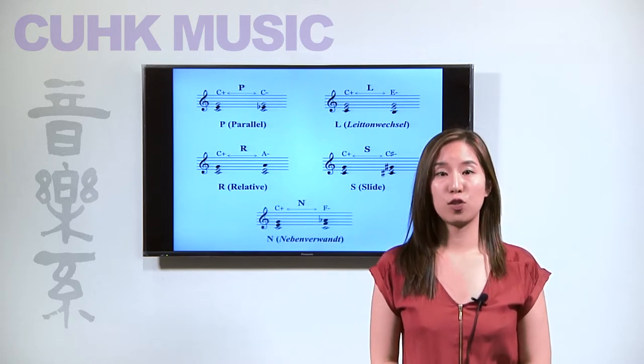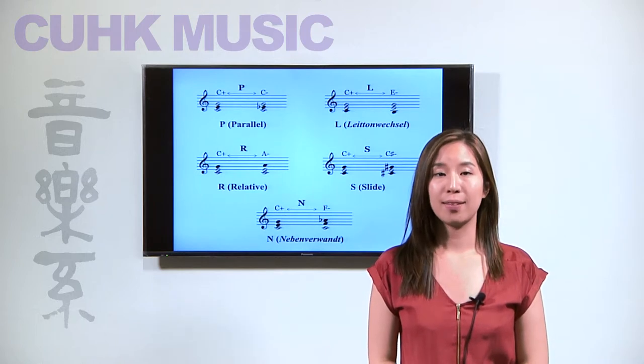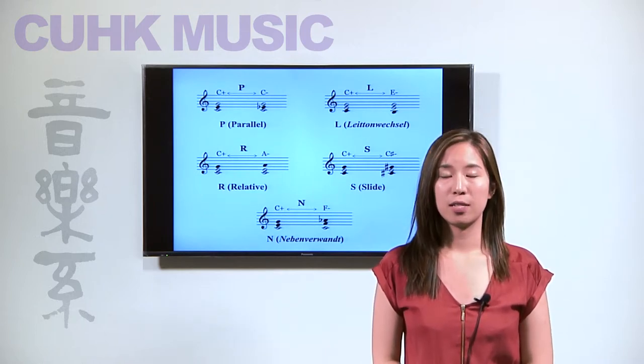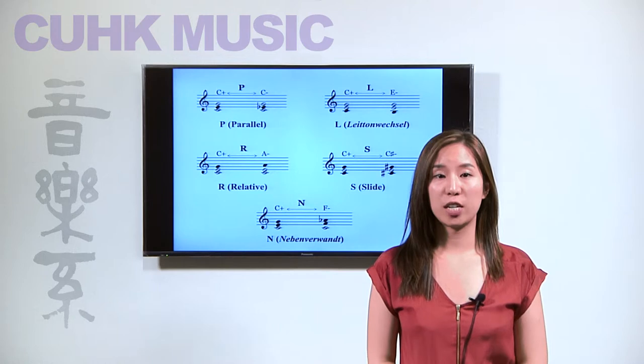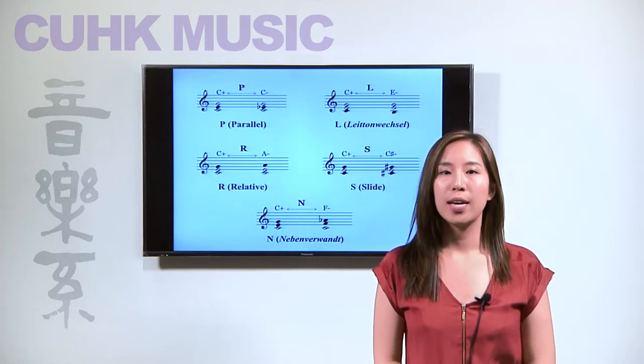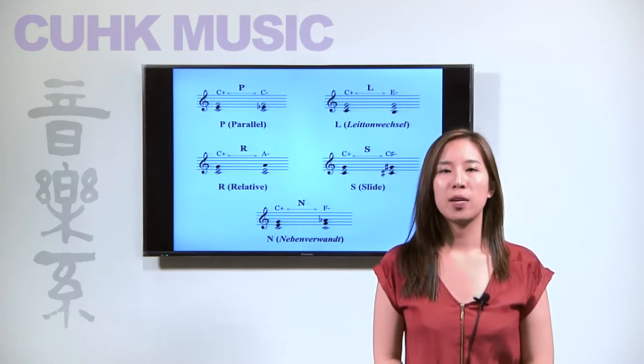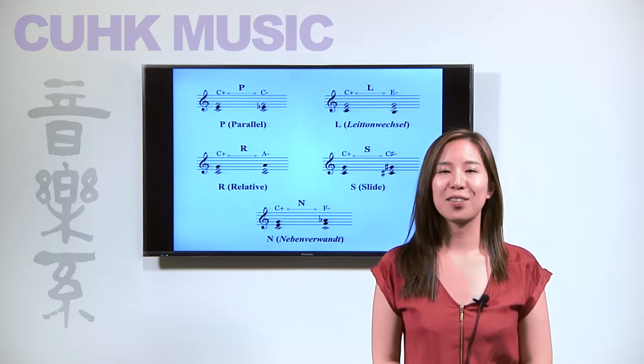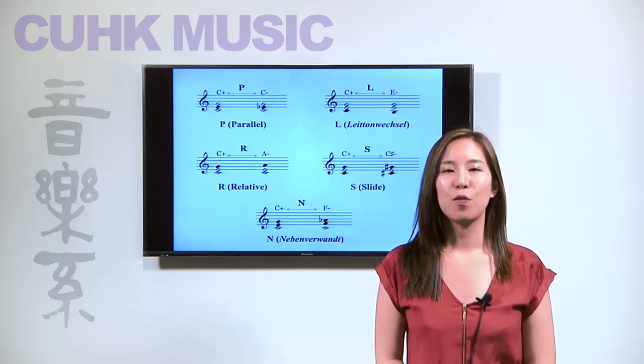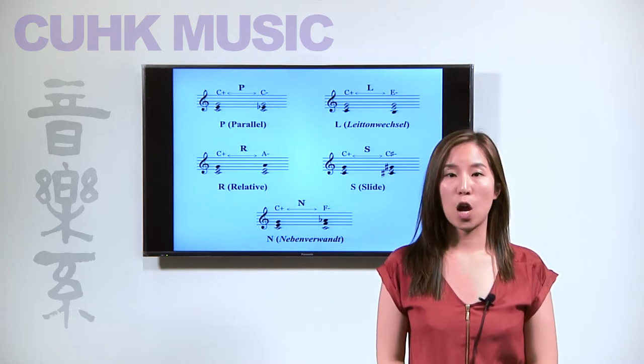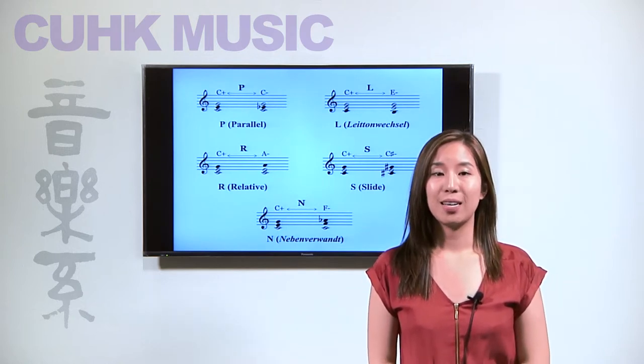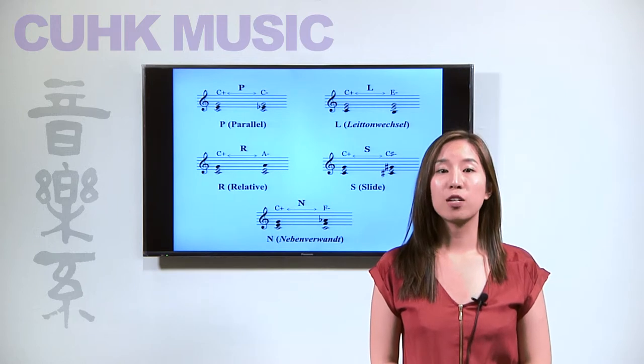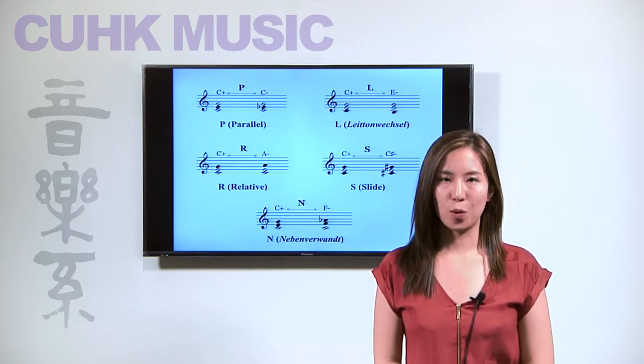The last triadic transformation is called N, nebenverwand, which is German for adjacency relation. Here the root of the major triad becomes the fifth of the minor triad or vice versa. For instance, the C major triad inverts around the common tone C and becomes the F minor triad through two semitonal shifts in two different voices.